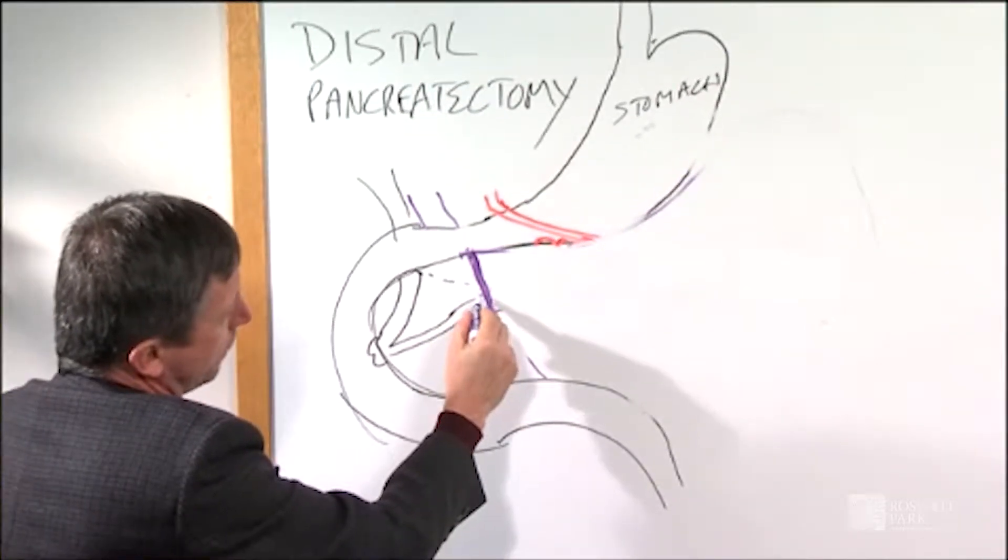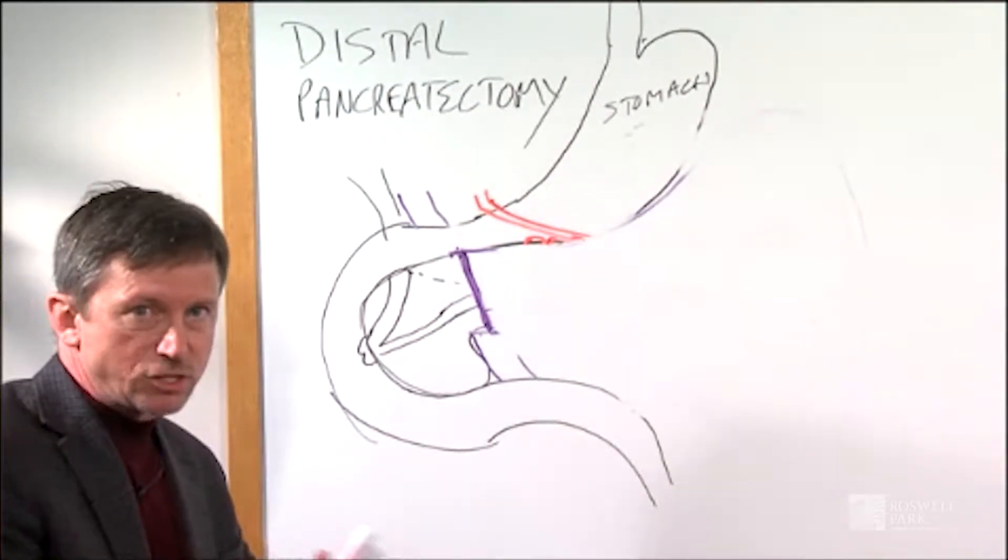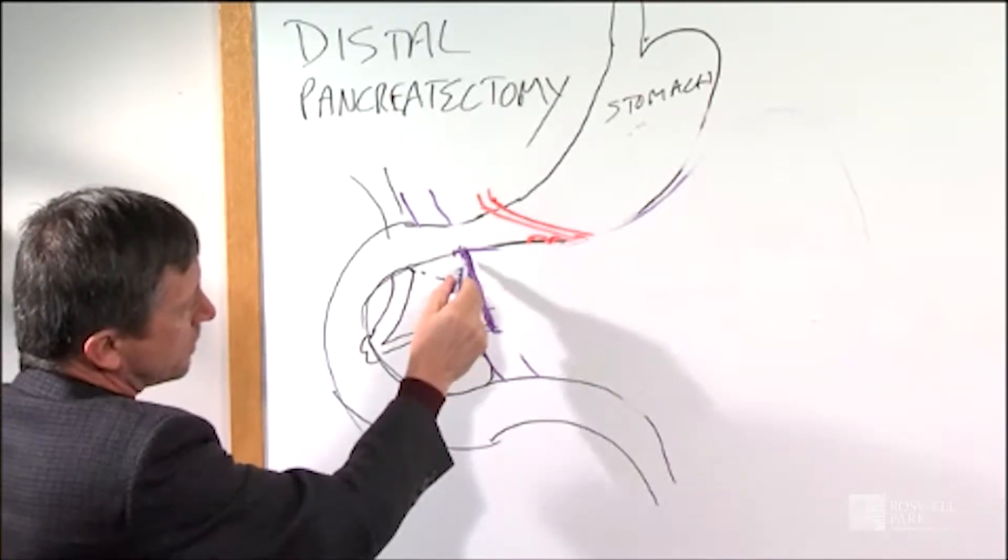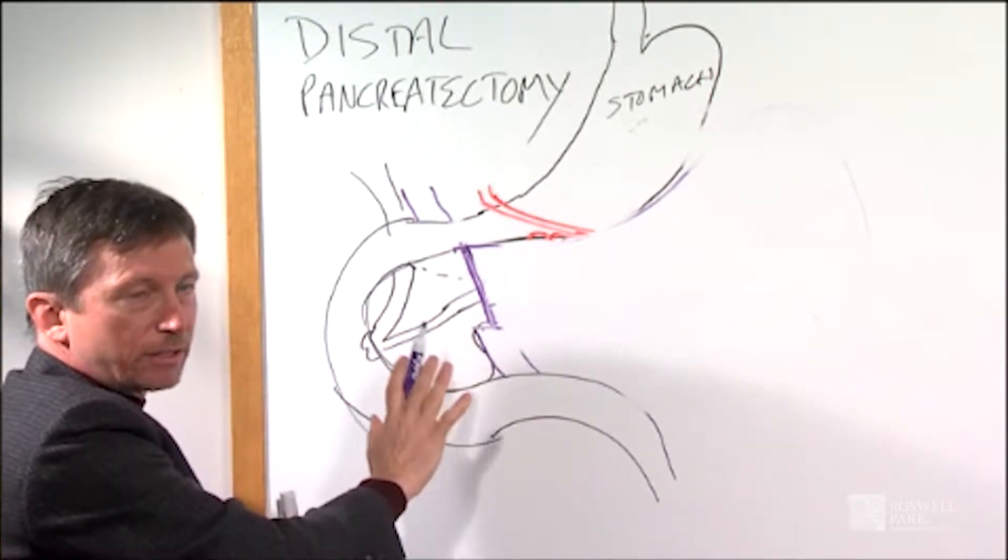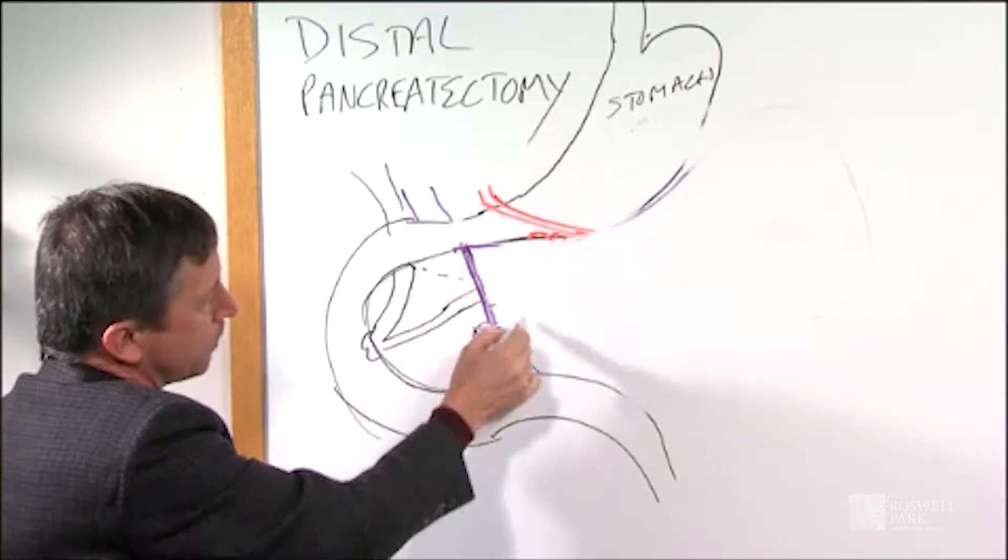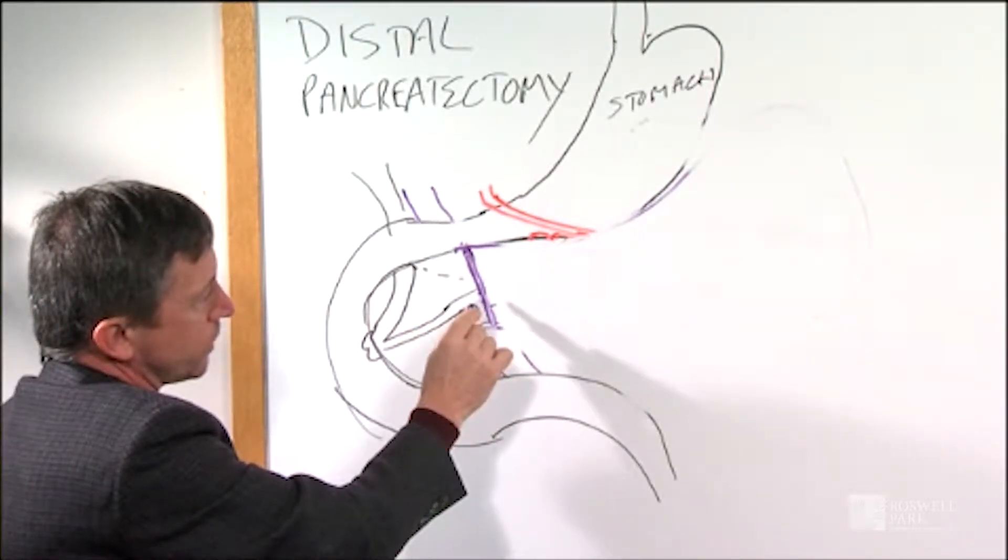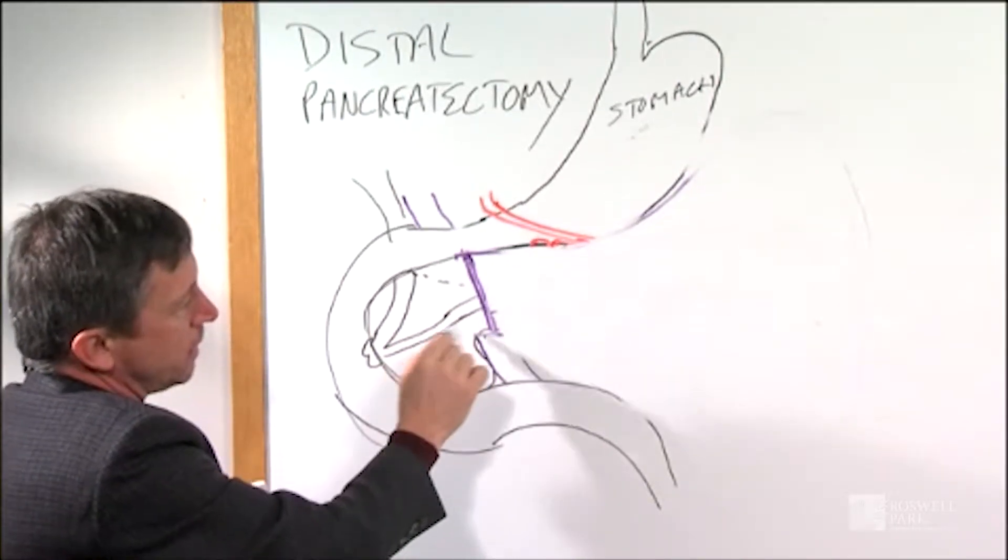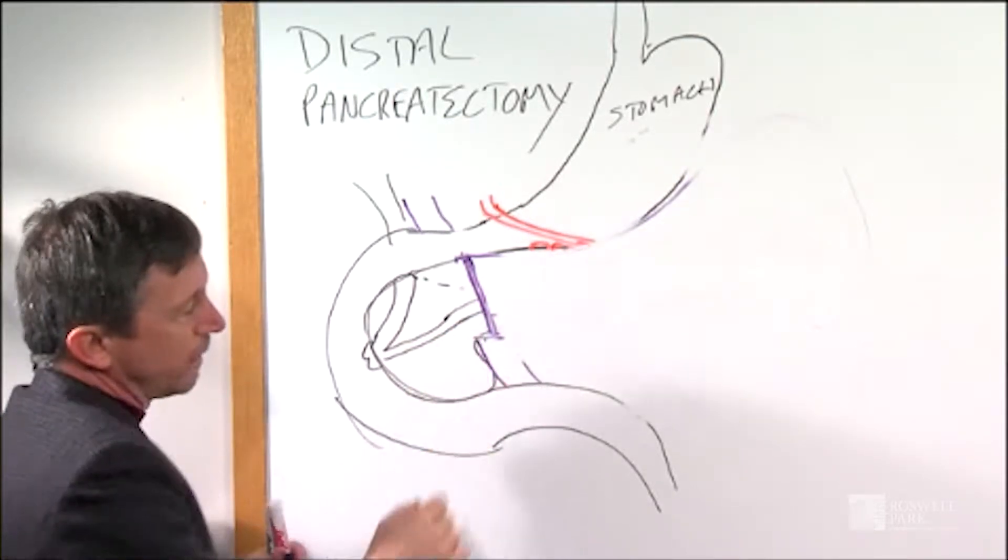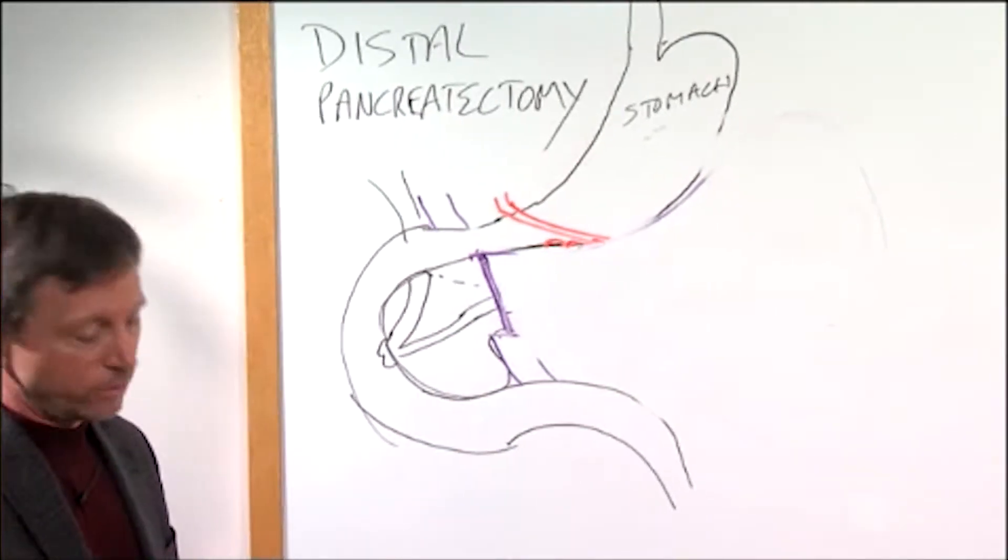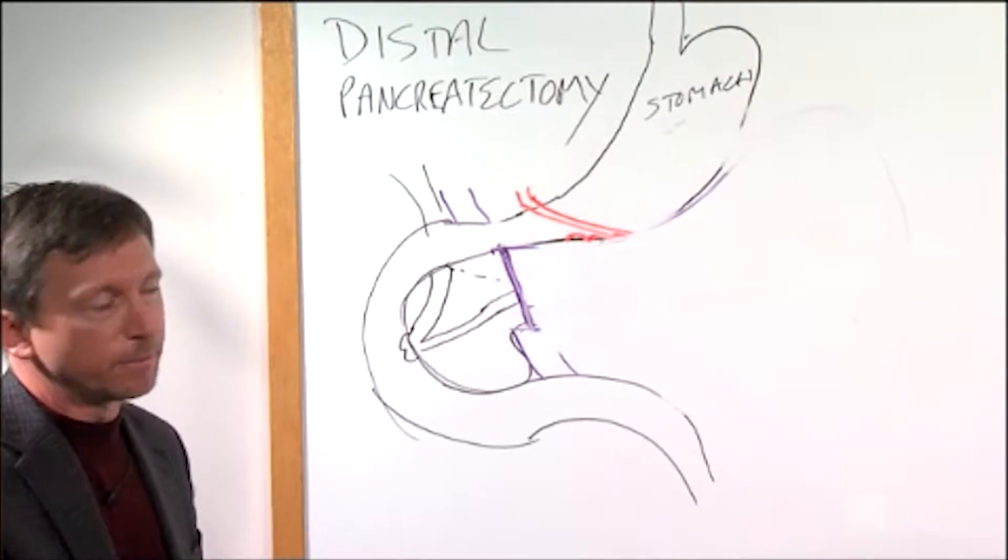You'll notice here that once the tail of the pancreas has been removed, there's a stump or end of the pancreas. The pancreas, as you know, makes digestive juices, and this stump of the pancreas—because the pancreas is a very soft gland—one of the complications that we see after the surgery is leakage from the pancreas. That happens anywhere from 20 to 30 percent of the time, so it's not uncommon.